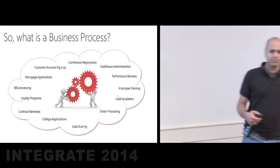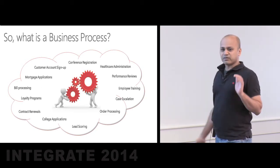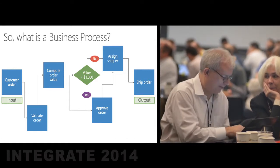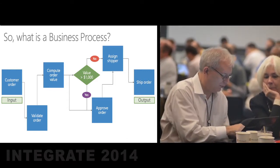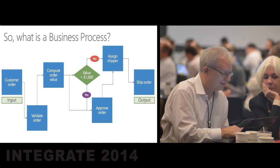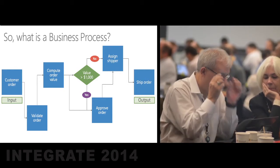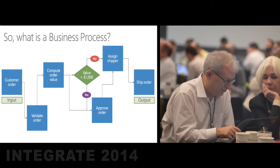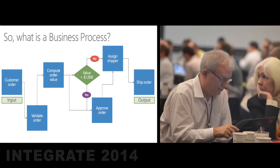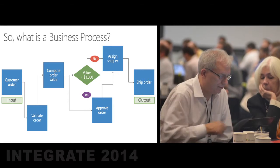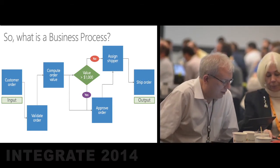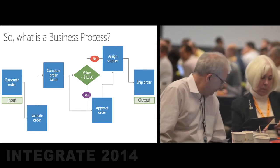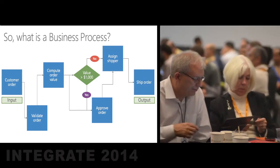When we interact with them, either we provide input to a business process — something like you turned in an expense report — you get an output from a business process, like an invoice or the goods you asked for. Or as part of a job, you're performing tasks as part of the business process. In a purchase order, you are the approving authority: somebody submits a report, you approve it, and you move on.